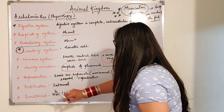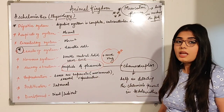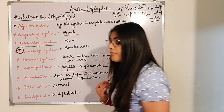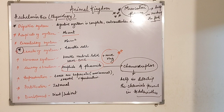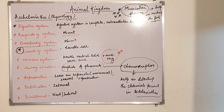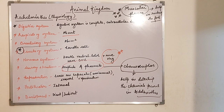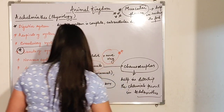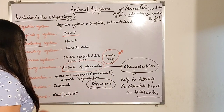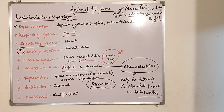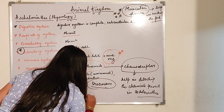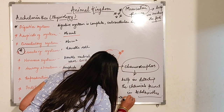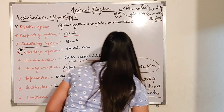Next is reproduction. The sexes are separate — that means they are unisexual. Male and female are separate; they are not hermaphrodite. The specific term given to this is dioecious. Fertilization is internal and development is direct or can also be indirect. Direct development takes place in Loa loa, also called the eye worm.